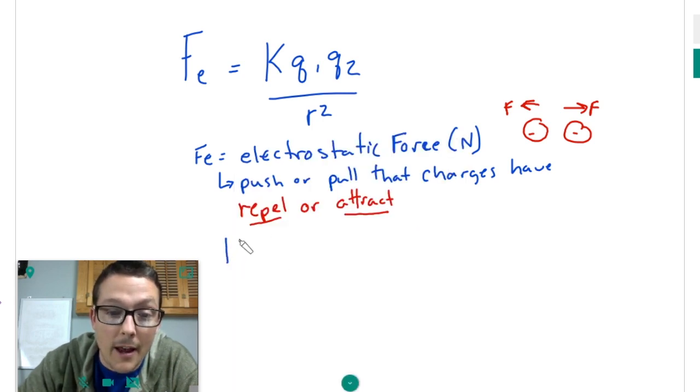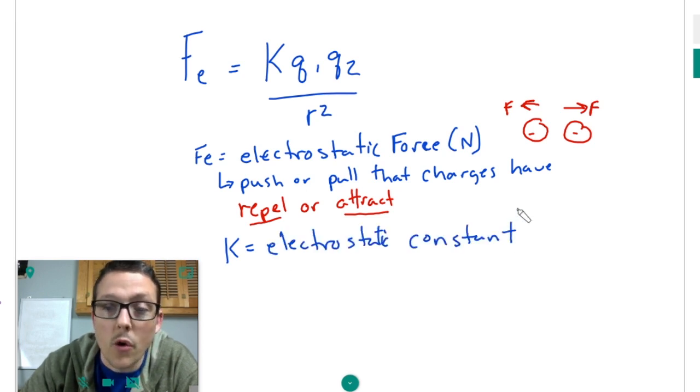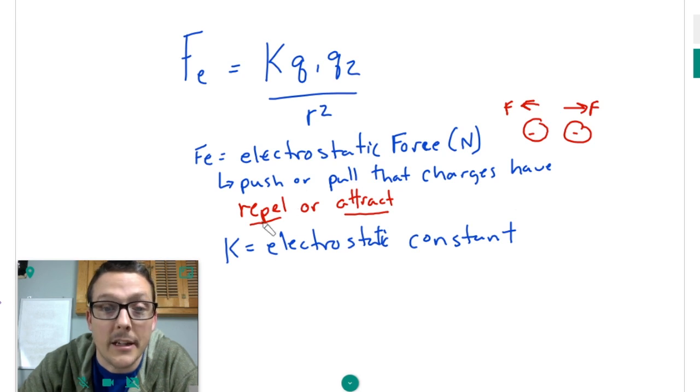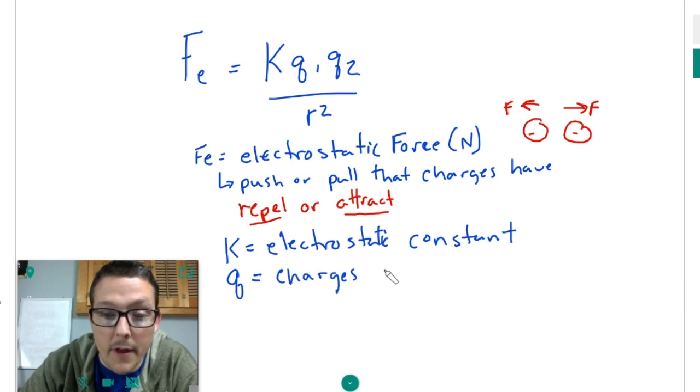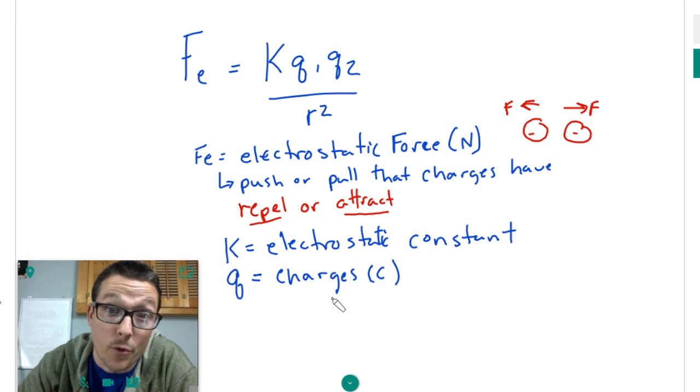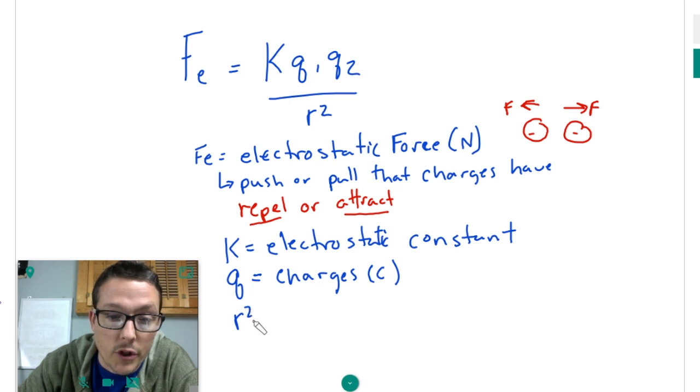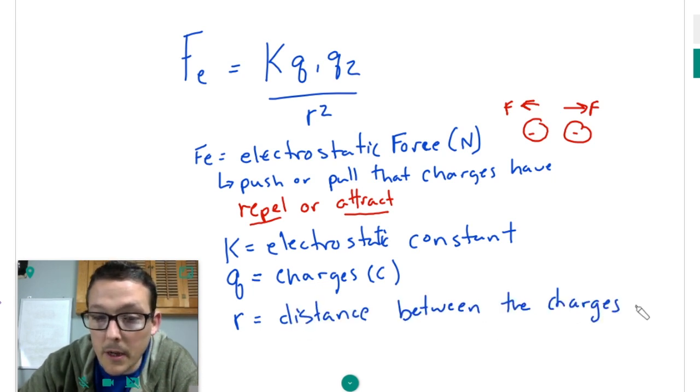Next is K, and this is going to be the electrostatic constant. And I'll go more in depth to what that exactly is in just one second. Q's are going to represent charges. And remember that they have a unit of Coulomb after the great Charles Coulomb, or as we say in the physics community, Charlie! And then R squared, or just R, let's just get rid of that squared for now. R is going to be the distance between them, the charges. And this is going to be in meters.